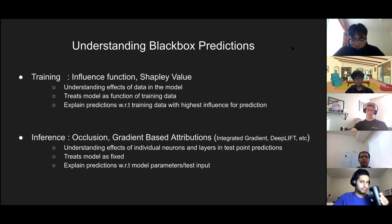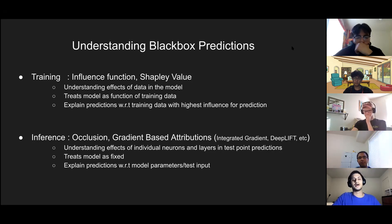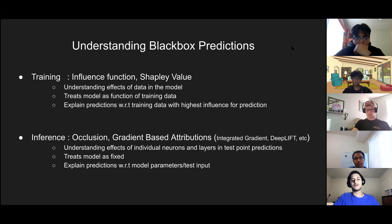These techniques work in two different areas. The reason it's known as a 'black box' is that it's still very hard to understand, for more complex models, why the model made the prediction it did. The two areas where you can naturally understand what the model's doing are the training phase and the inference phase. At the training phase, you're trying to understand the effects your training data has on the model. At inference — after you've trained the model — you're trying to understand the effects of individual neurons and layers when predicting a certain label.